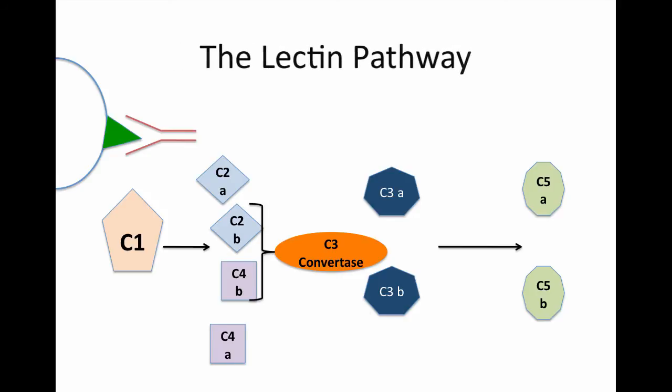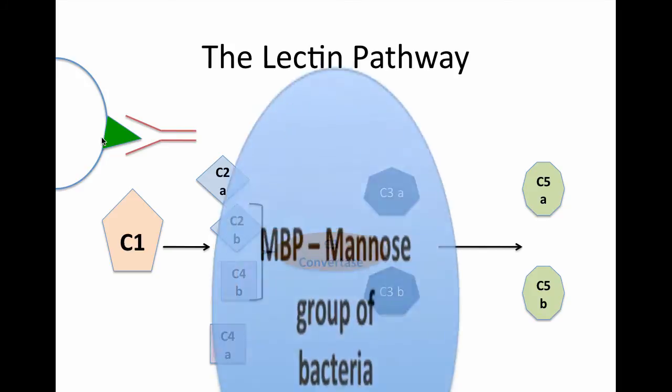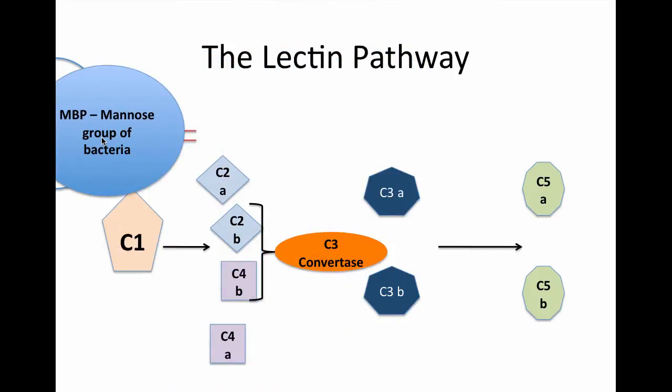The second pathway, which is the lectin pathway. It differs from the classical pathway in that what activates the pathway is not an antigen antibody binding. Instead, it is a mannose binding protein binding to a mannose group of bacteria.